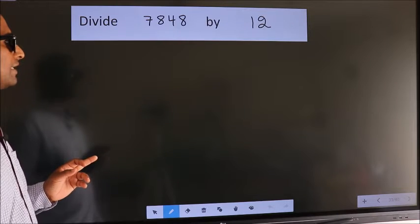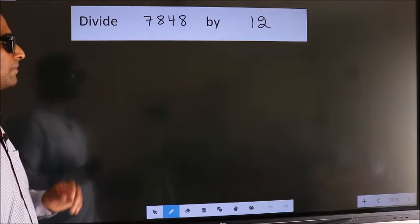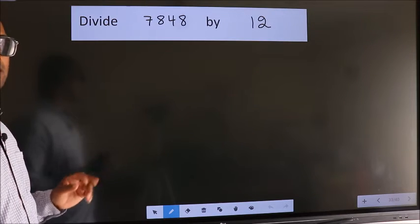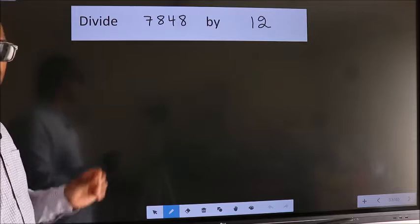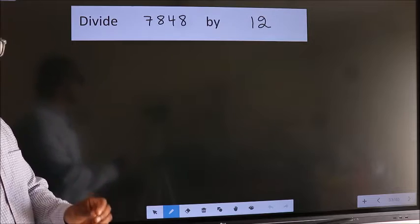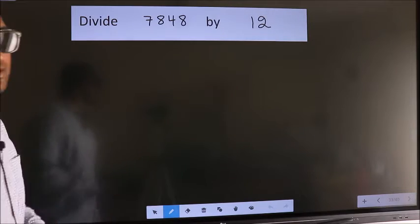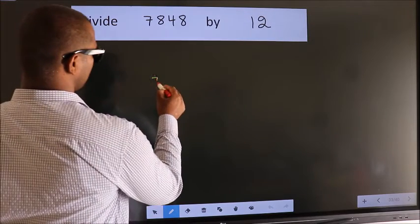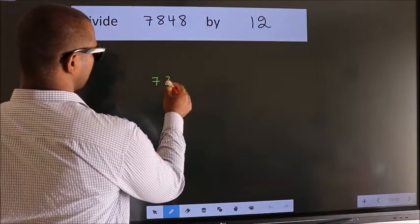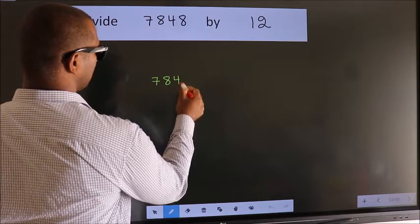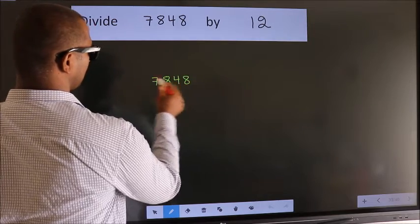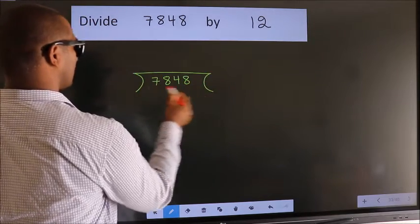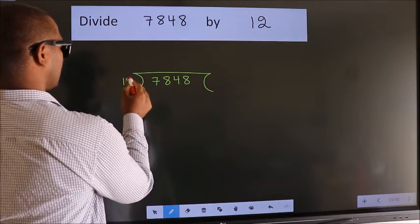Divide 7848 by 12. To do this division, we should frame it in this way: 7848 here, 12 here.